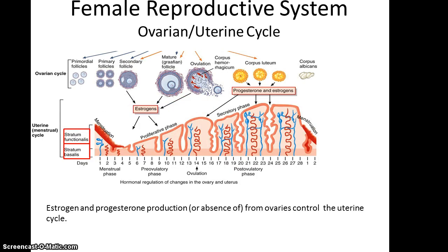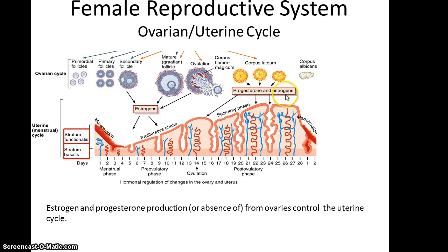This has to be coordinated with the development of the proper stratum functionalis, rich in blood vessels and a place for a fertilized ovum to embed. It is the production of estrogen by the ovaries that stimulates and initiates development of the stratum functionalis, and then progesterone and estrogens maintain it. When these hormones are no longer being produced, you have menstruation — the sloughing off of the stratum functionalis.